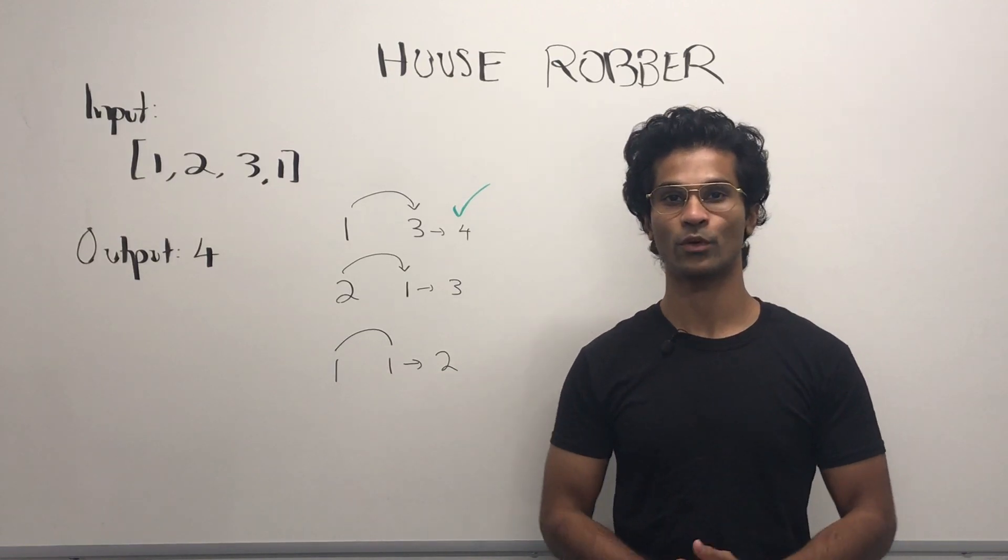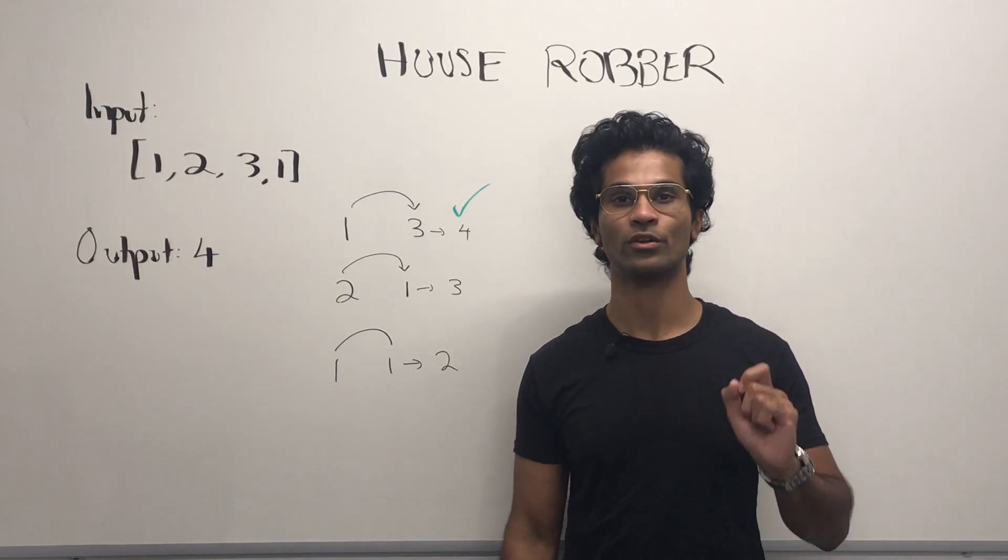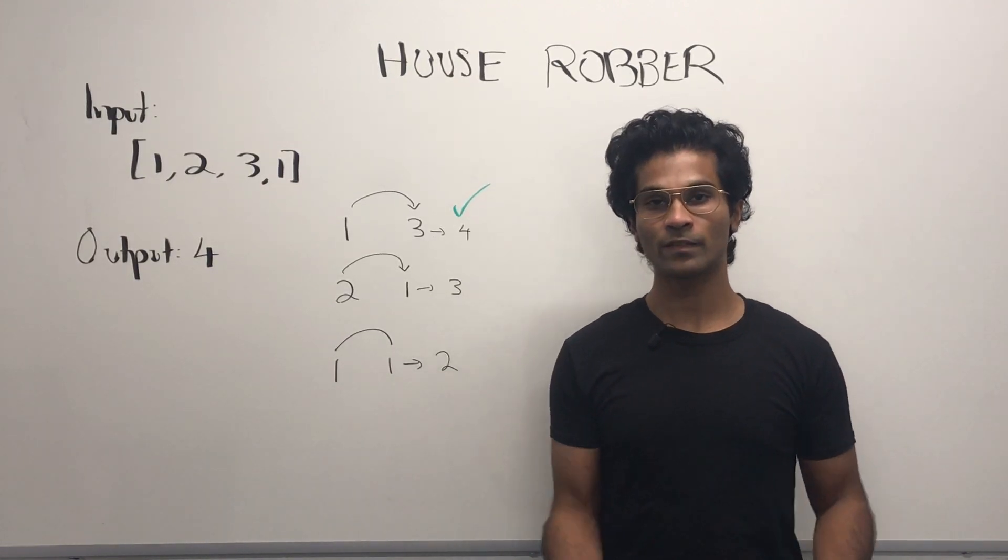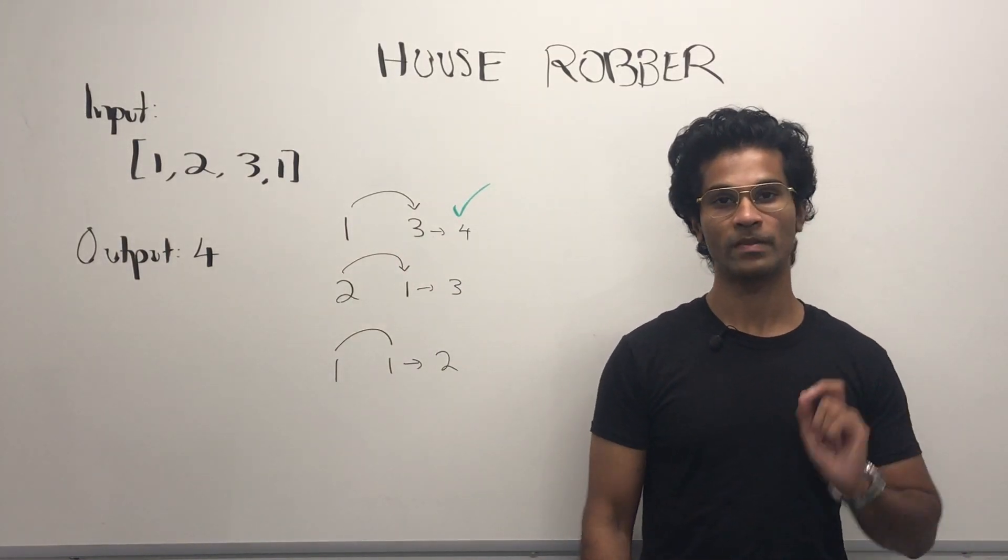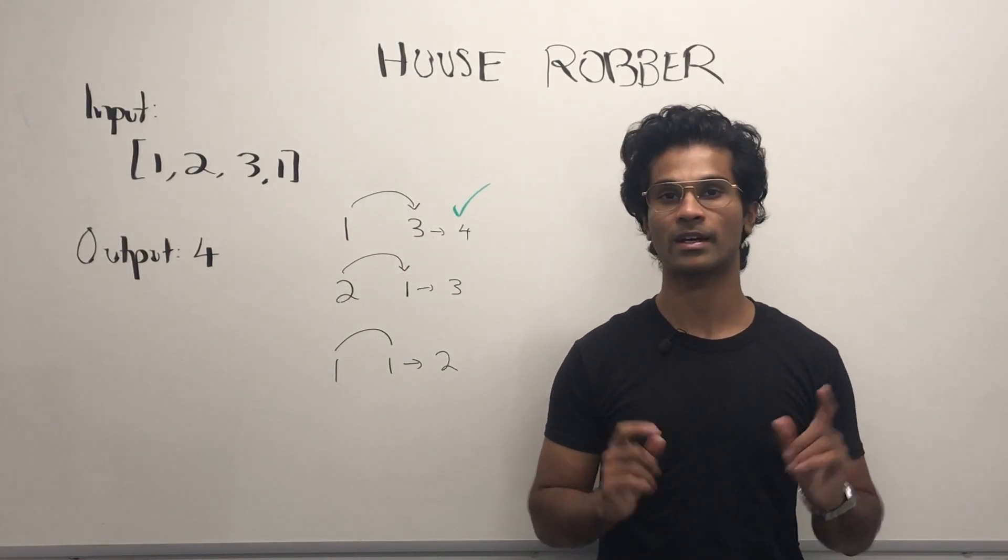So the input is going to be an integer array and the output is going to be an integer. What we have to do is pick numbers such that we maximize our score, but the condition is that we can't pick consecutive numbers.